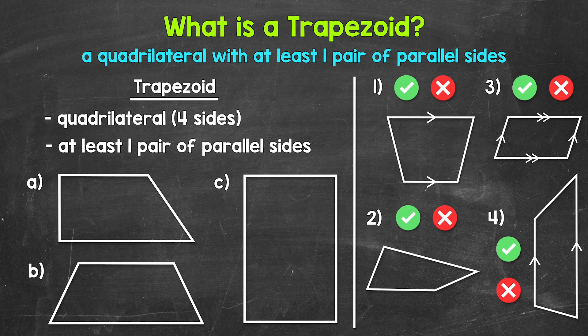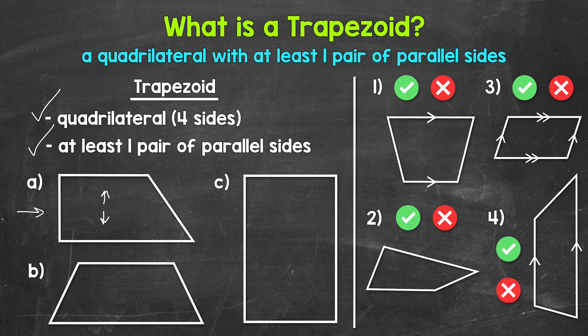Trapezoids are quadrilaterals, so they have four sides, and then they have at least one pair of parallel sides. Looking at example A right here, we can see that we have a quadrilateral, and we can also see that we have one pair of parallel sides — these sides right here. We can mark these parallel sides by using arrow symbols on the sides, an arrow symbol here and here. Those arrows show that those sides are parallel.